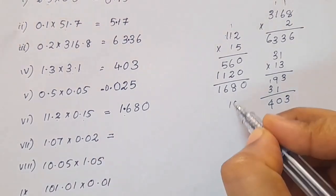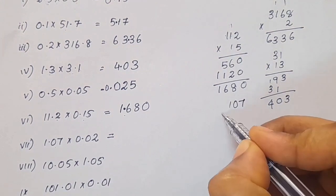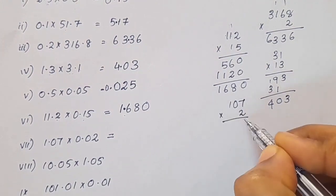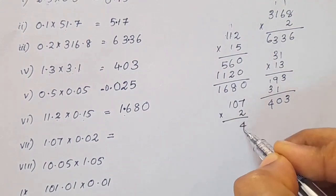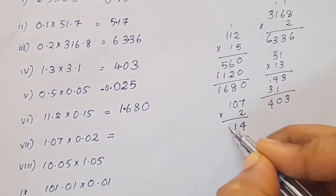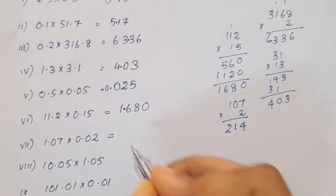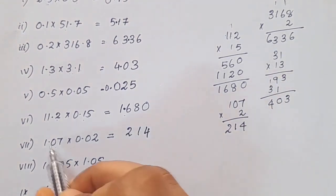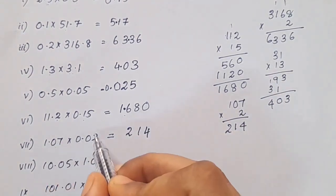1.07 × 0.08: remove decimal points to get 107 × 8. 7×2 is 14... 107 × 8 = 856.